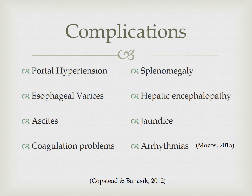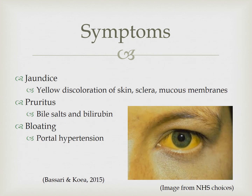According to Mozos, the heart is one of the most adversely affected organs in patients with liver cirrhosis. Cirrhosis increases one's risk of developing an arrhythmia such as atrial fibrillation or flutter, due to cirrhotic cardiomyopathy and electrolyte imbalances.